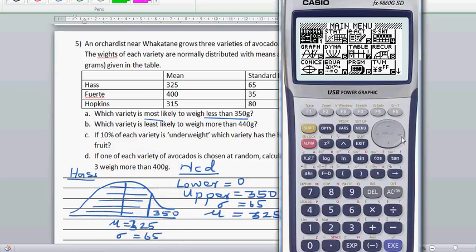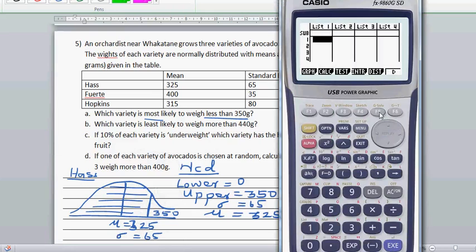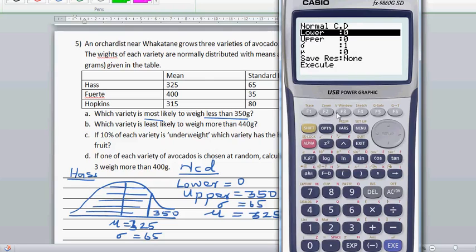Let's enter this on the calculator. First go to stats, then go to distribution F5, then go to normal, then NCD. They will ask you what is the lower. The lower is 0, the upper is 350, the standard deviation is 65, and mu which is the mean is 325. The calculator will work out the answer and the probability has to be more than 50%.